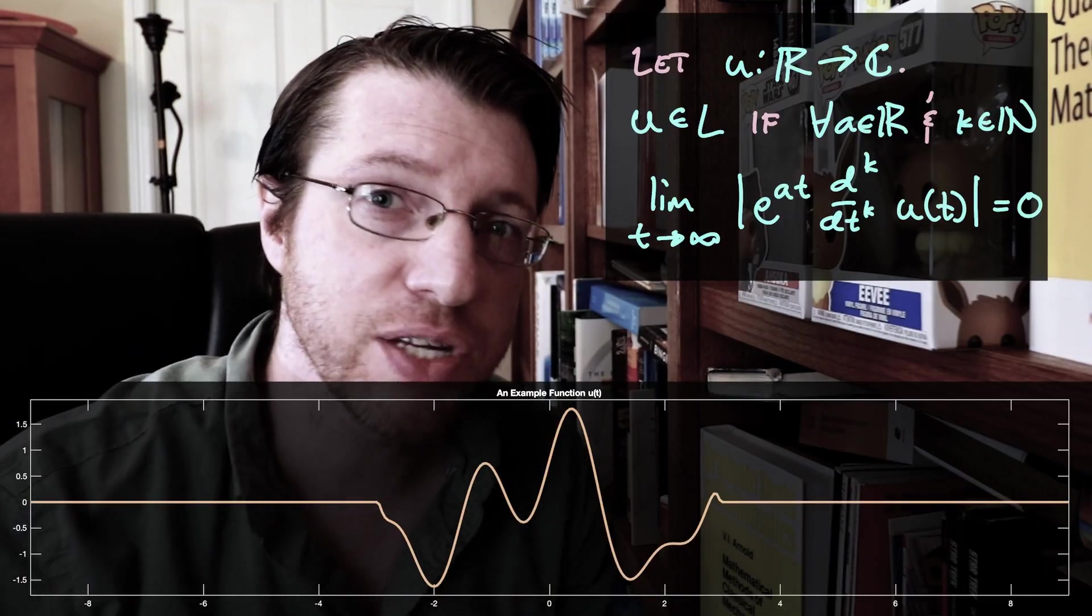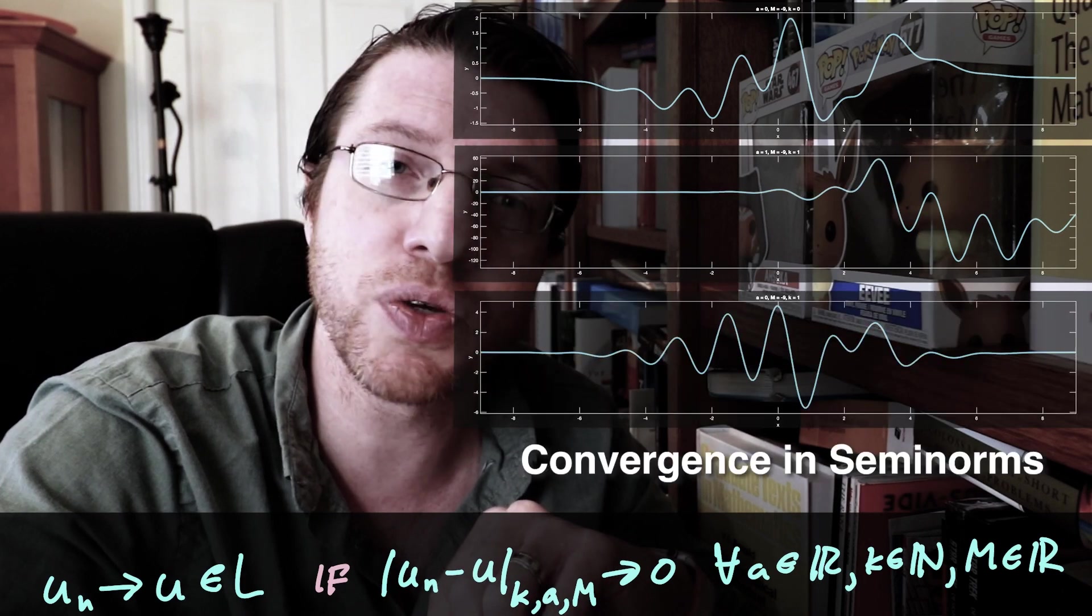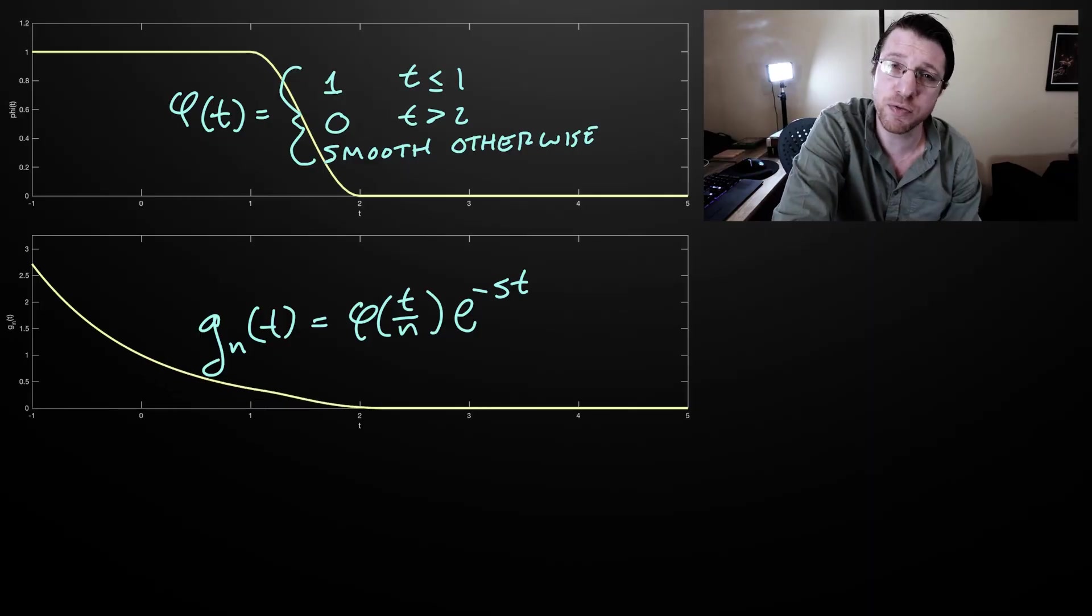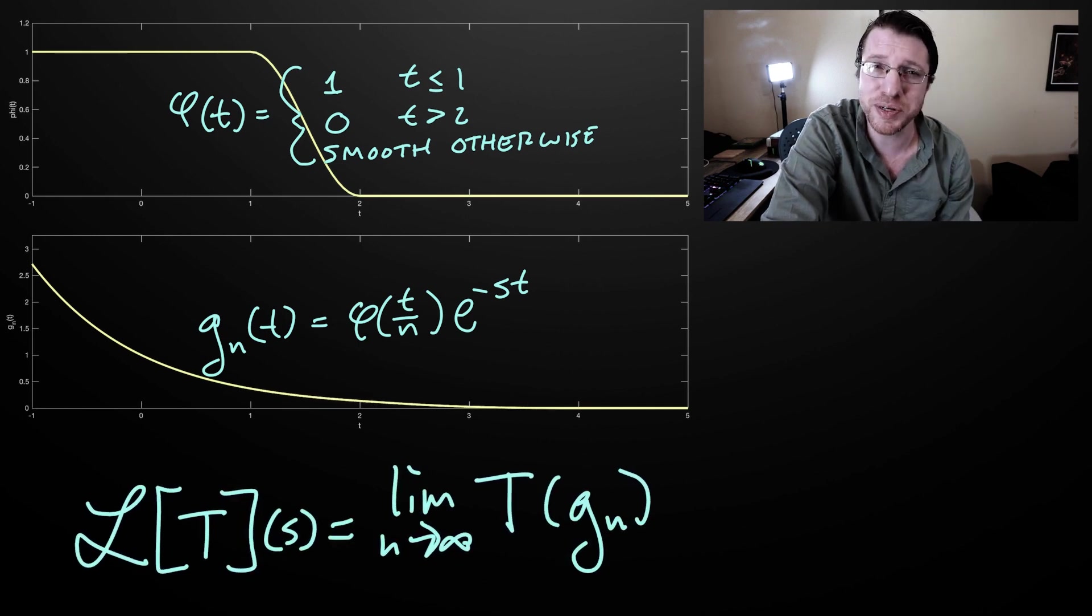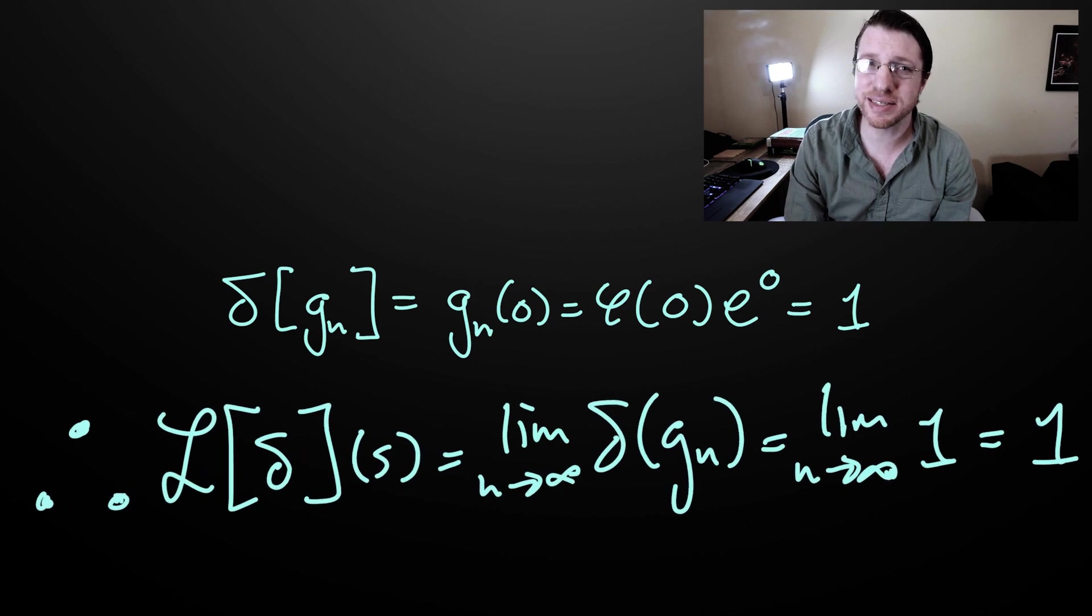In the last lecture, we introduced the concept of distributions and described how we can define a Laplace transform for an arbitrary distribution. This involved defining the space that we call L and a collection of semi-norms on that space. We defined a Laplace transform on a distribution or generalized function as this action on a certain sequence, and this allowed us to show the delta function's Laplace transform was simply 1.